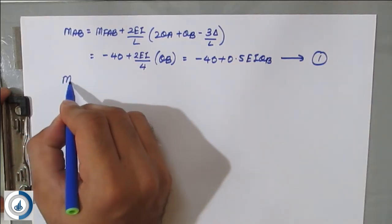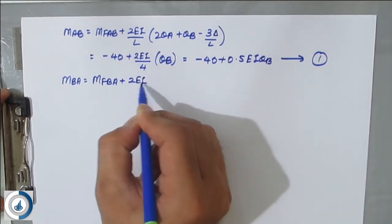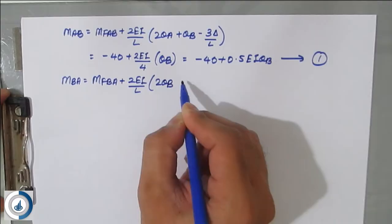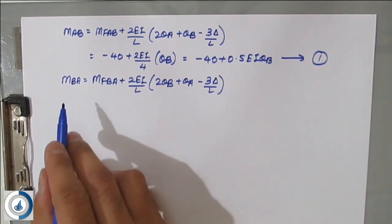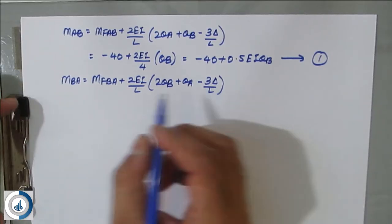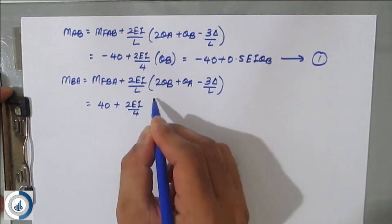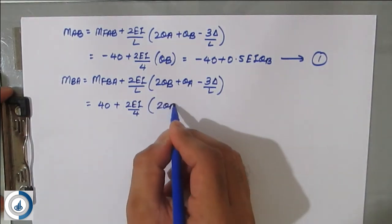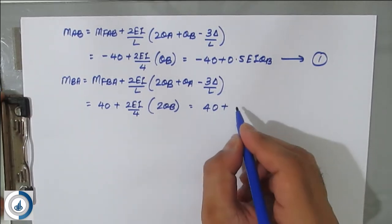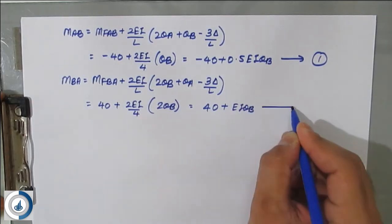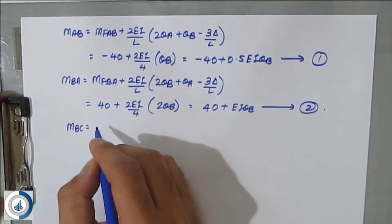For M_BA: MF_BA + (2EI/L)(2θ_B + θ_A − 3δ/L). Substituting: MF_BA = +40, span = 4 m, I = 1, θ_A = 0, δ = 0. This gives: M_BA = 40 + EI·θ_B. This is Equation 2.